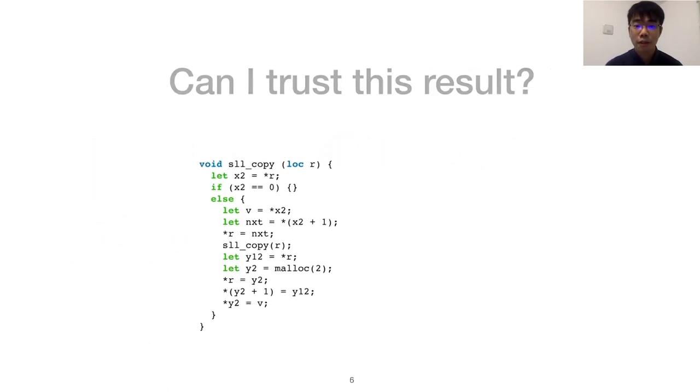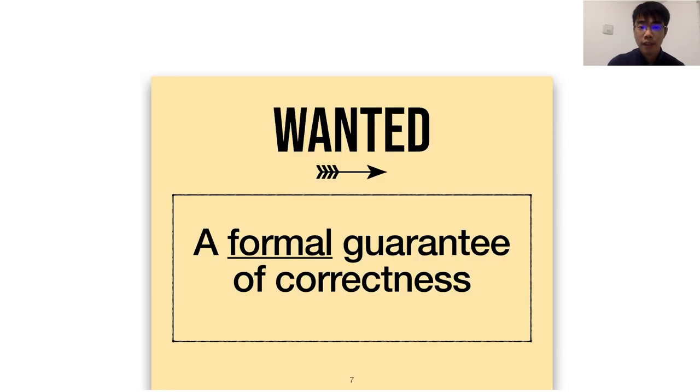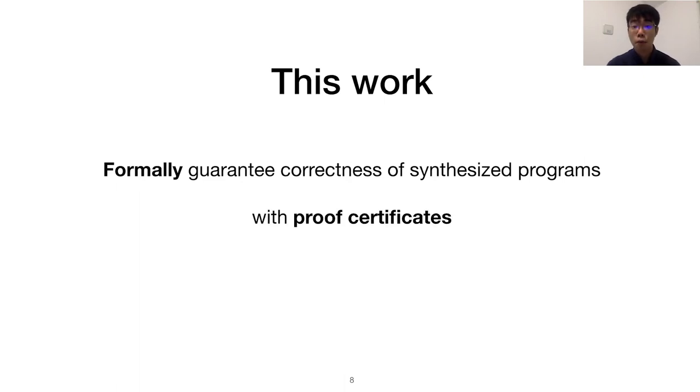But just then, you're hit with a wave of uncertainty. Can I trust this result? The synthesizer was written by humans, so surely a bug could make it synthesize incorrect programs. Can we have a guarantee that programs synthesized by Syslic correctly implement their specifications? In this work, we discuss a way to produce this formal guarantee in the form of proof certificates for each synthesized program.